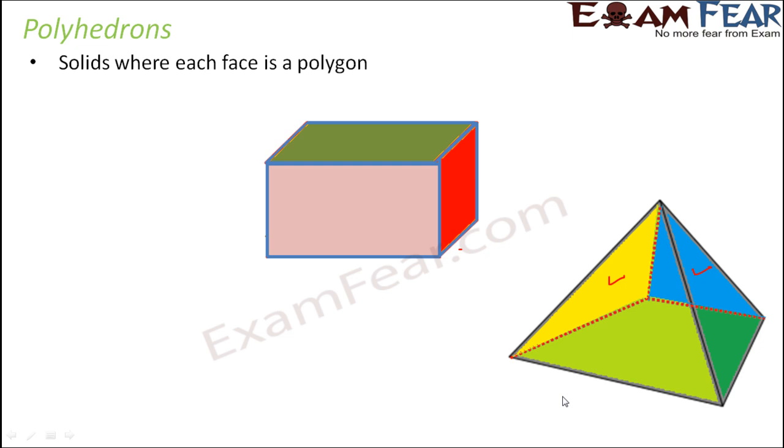When you look at this pyramid, what are the faces that it has? It has four triangular faces and there is one quadrilateral face which forms the base. This base is a quadrilateral, but whether it is a quadrilateral or a triangle, they are all polygons.